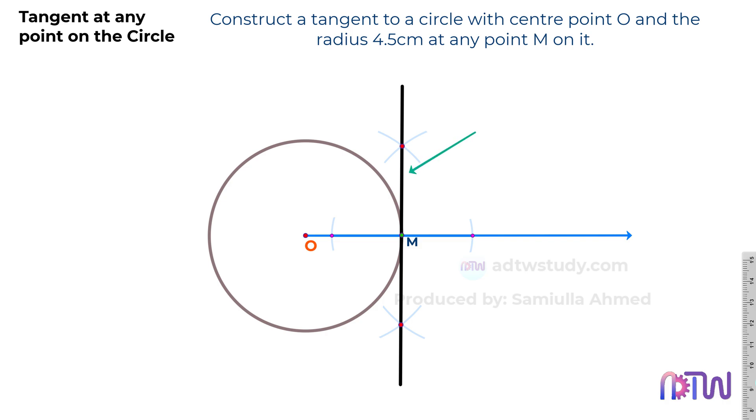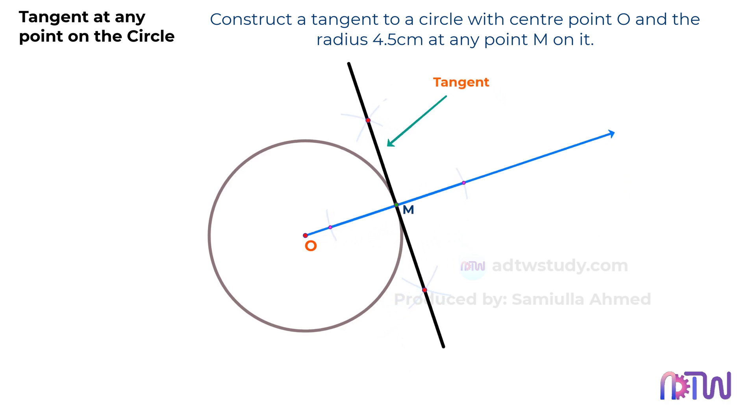Therefore, this line is the required tangent which is passing through at any point M on the circle.